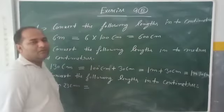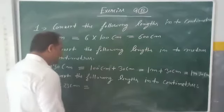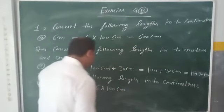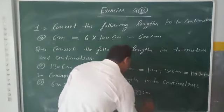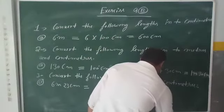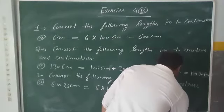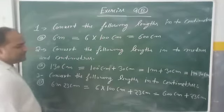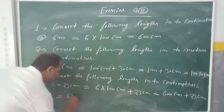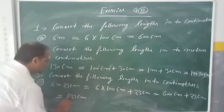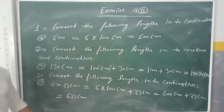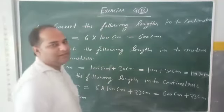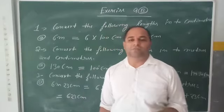We know 1 meter equals 100 centimeters, so we write 6 meters as 6 into 100 centimeters plus 23 centimeters, which gives 600 centimeters plus 23 centimeters, equaling 623 centimeters. Complete exercise 9B in mathematics, then take a photo and send it in the group. Thank you and have a nice day.